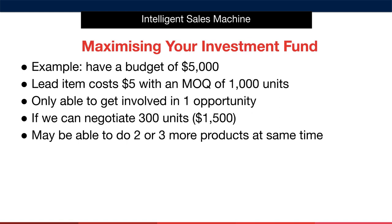Let's begin by talking about maximizing our investment fund. For the purpose of illustrating this, let's imagine that you have a budget of $5,000 available after determining how aggressive of an investor you want to be. Now let's imagine that the lead item — the first item that we want to purchase — costs $5 with an MOQ of 1,000 units. If we couldn't negotiate this MOQ down, we're only able to get involved in one opportunity with that amount of capital.